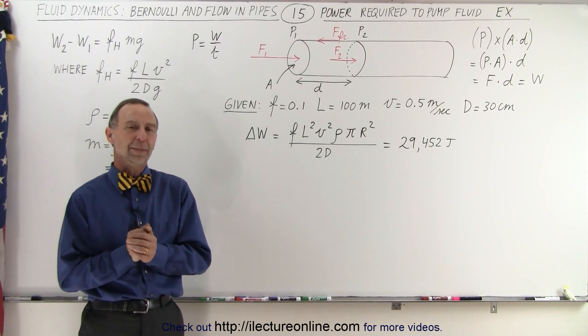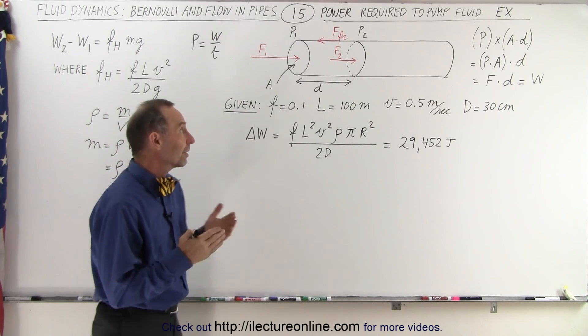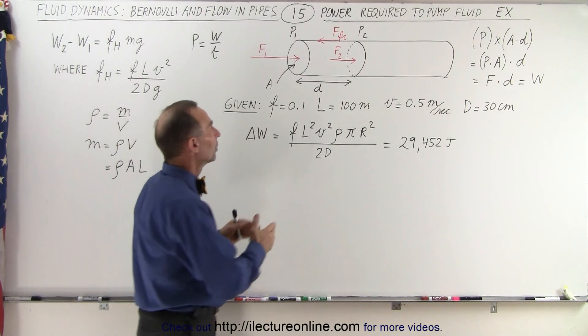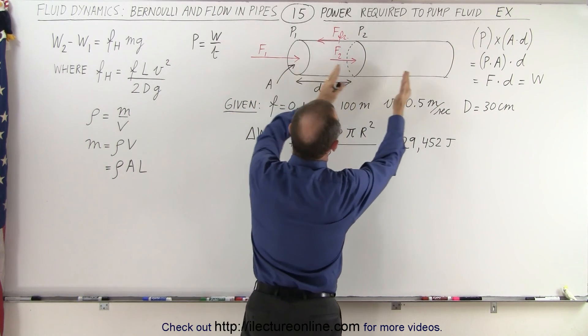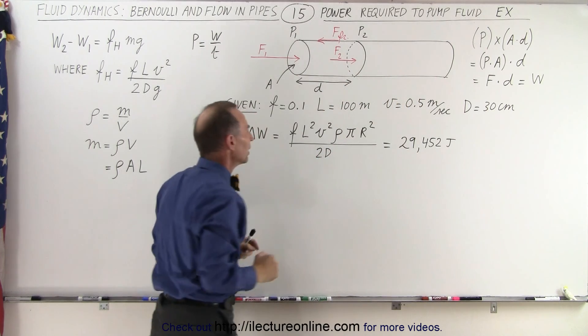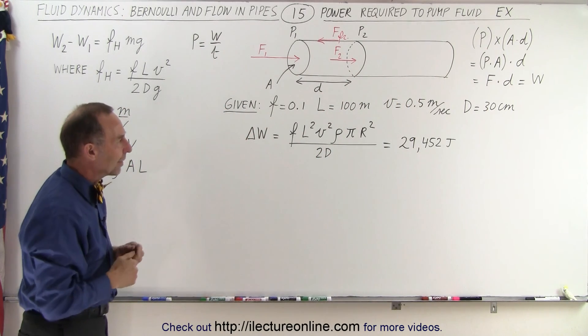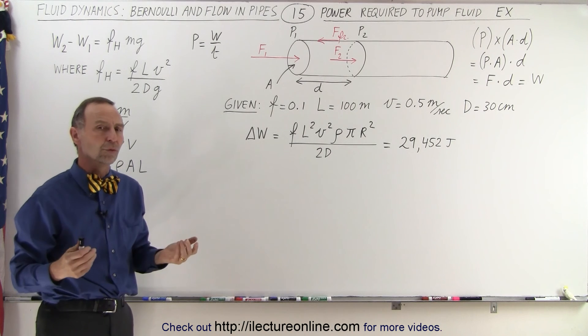Welcome to iLectureOnline. In the previous video, we figured out how much work it would take to take 100 meters of fluid and move it a distance of 100 meters. The work was 29,452 joules.